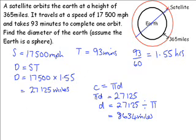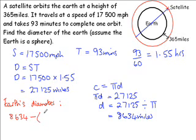So if we subtract two lots of 365 from the diameter of the larger circle, we'll be left with the diameter of the Earth. So the Earth's diameter is found by taking 8,634 and subtracting from it two lots of 365, which gives us an answer of 7,904 miles.